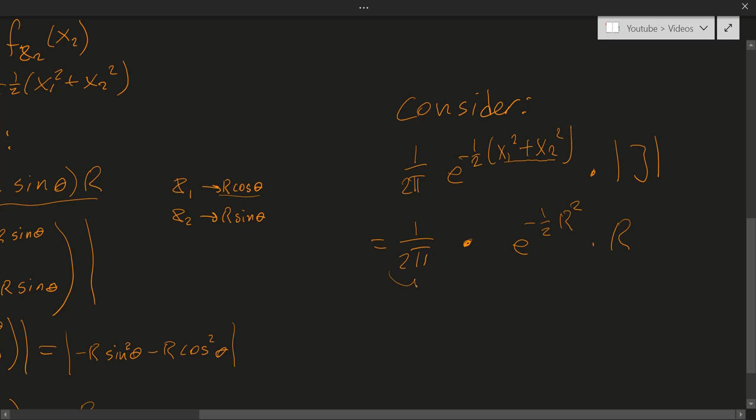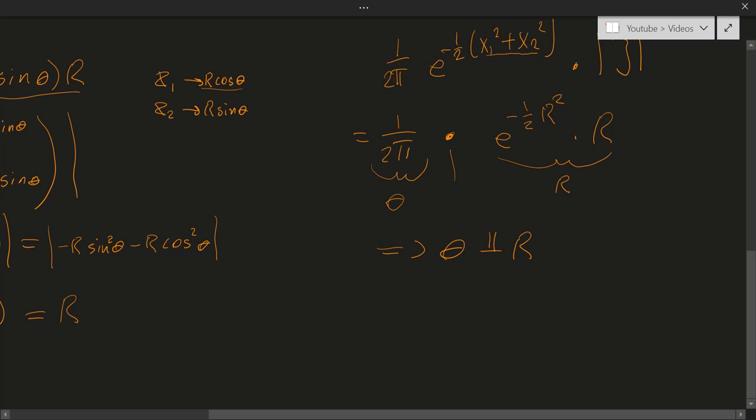So here we have something which describes our theta. I know there is no theta in here, but it's just a constant density. And over here we have a density containing r. And since we can split, like this was the simultaneous density of theta and r, so we can split this into a product. In fact, this means that theta is independent of r, which is quite nice for us. Furthermore, this is the density of theta being uniform in the interval 0 to 2 pi, because the density of such a random variable is simply 1 divided by the length of the interval, which in this case must then be 2 pi.